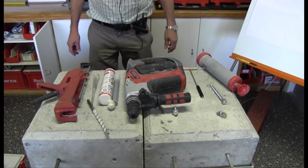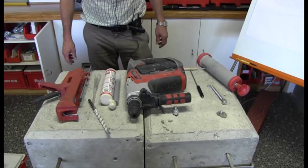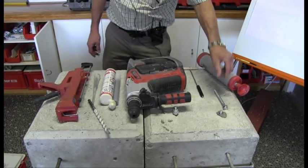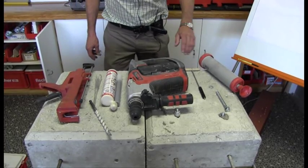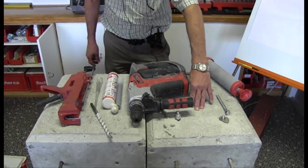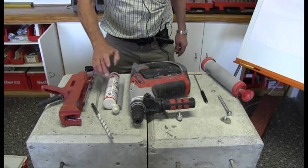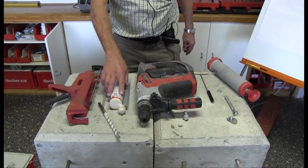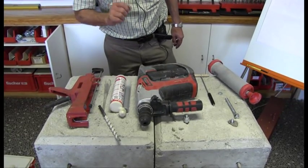The purpose of this demonstration is to show how to install a 10 millimeter diameter threaded stud into a concrete block using FISV Fissure Injection System, V standing for vinyl ester chemical.